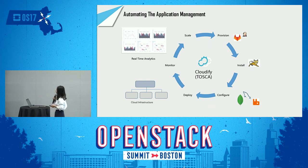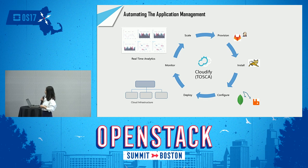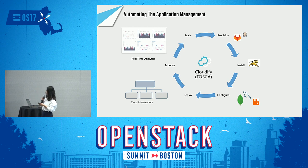It really takes six steps to deploy and manage an application: provisioning, install, configure, deploy, monitor, and scale. And all of these steps can be described in the blueprint.